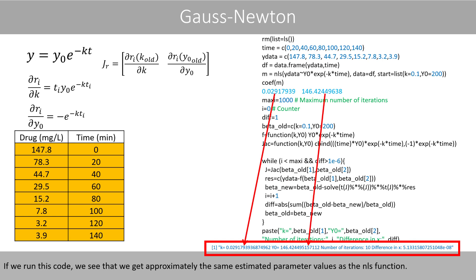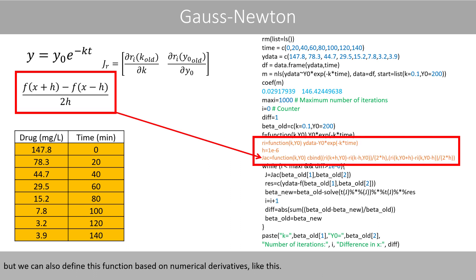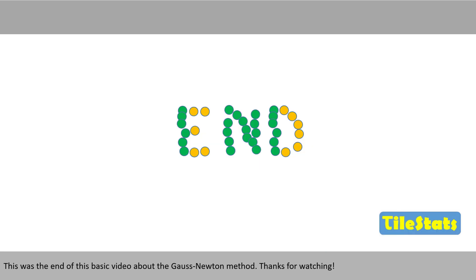If we run this code, we see that we get approximately the same estimated parameter values as the NLS function. Note that the Jacobian function includes the analytical derivatives we calculated earlier, but we can also define this function using numerical derivatives. This was the end of this basic video about the Gauss-Newton method. Thanks for watching!